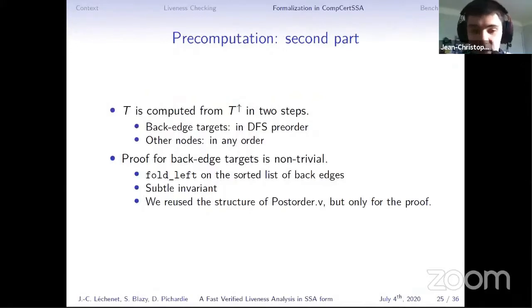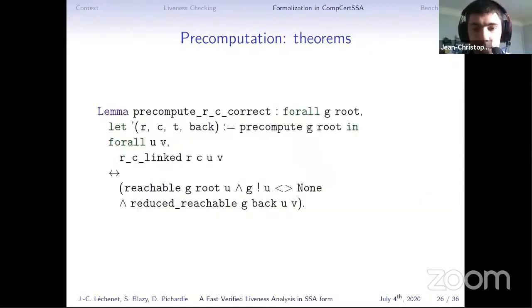The second part is the computation of T from T_row. We follow Boissinot et al.'s suggestion to do that in two steps. The first step is for back edge targets. There we must do that precisely using a DFS order, and then we can do the computation for the other nodes in any order. And actually the proof of the first part was non-trivial because of this order that we must follow. In terms of definition, it's just a fold_left on the list of back edges, but the invariant is quite subtle. Actually for simplicity, we reuse again the structure of postorder but only for the proof. It works quite well.